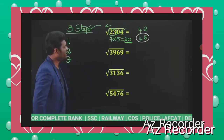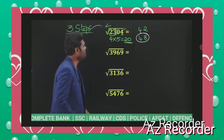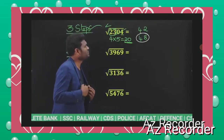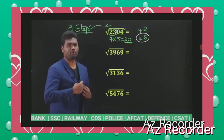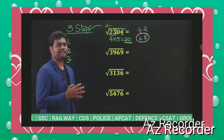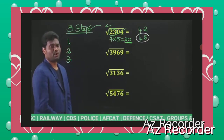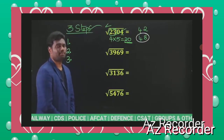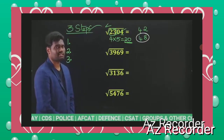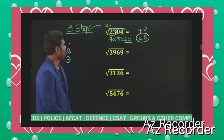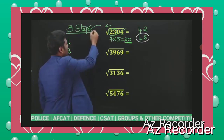So 48 squared is going to be 2304 — that is our answer. Very, very simple. Just follow these three steps.